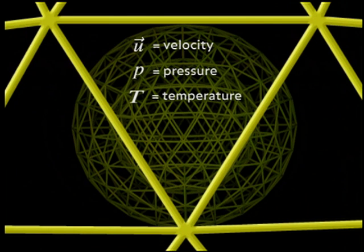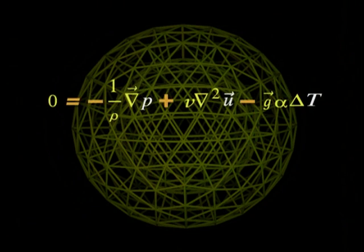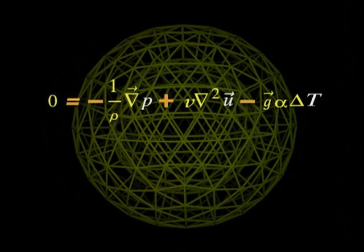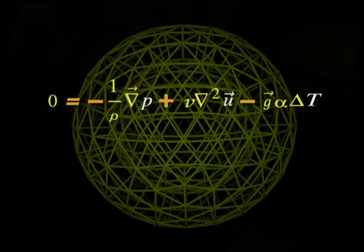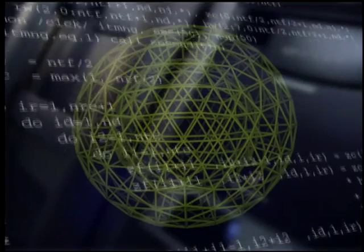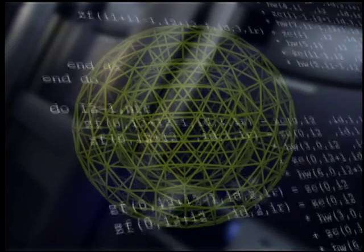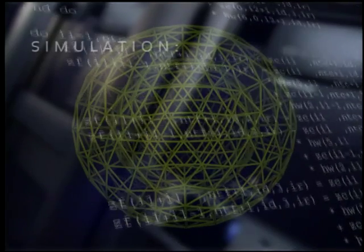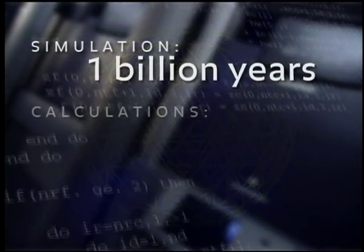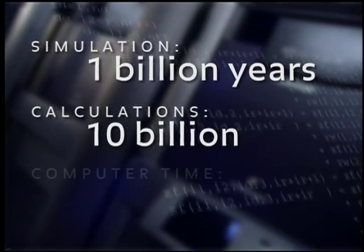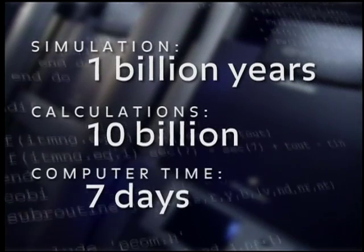The properties of one cell are related to the properties of all its neighboring cells in a set of equations based on the laws of physics. Simulating the behavior of the Earth's mantle requires powerful computers that solve the model equations over and over again for each of the variable properties. This is necessary because as the properties of each cell change with time, so do the properties of all its neighboring cells. To simulate one billion years, the computer makes 10 billion calculations, which take seven days of computer time.